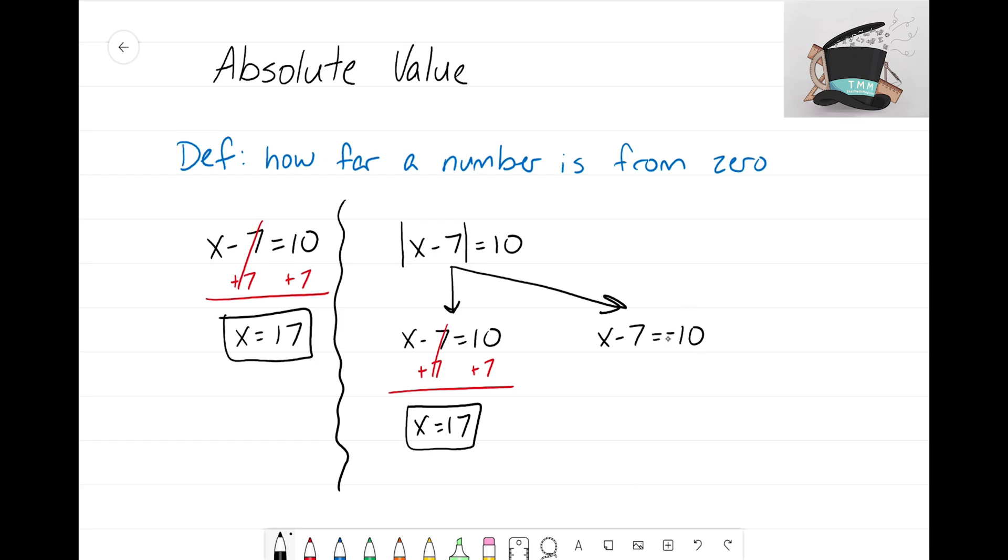Where you get that second answer from is from when you make that answer negative. So let's see what happens when I add seven on this side. Again, those sevens are going to cancel out. I'm left with x equals, well, negative 10 plus seven would create negative three. And those are the two answers that are going to satisfy this equation that we started off with.